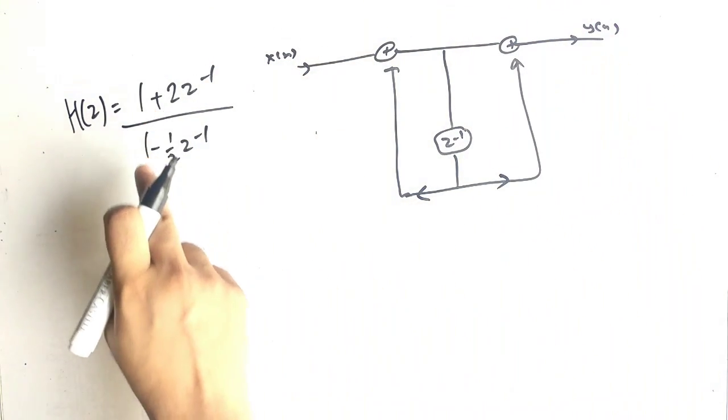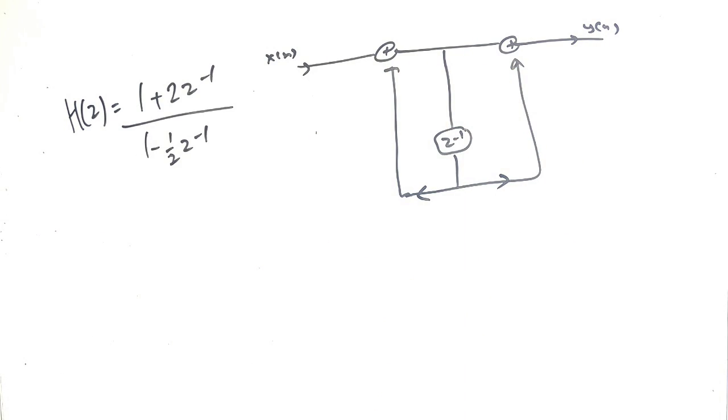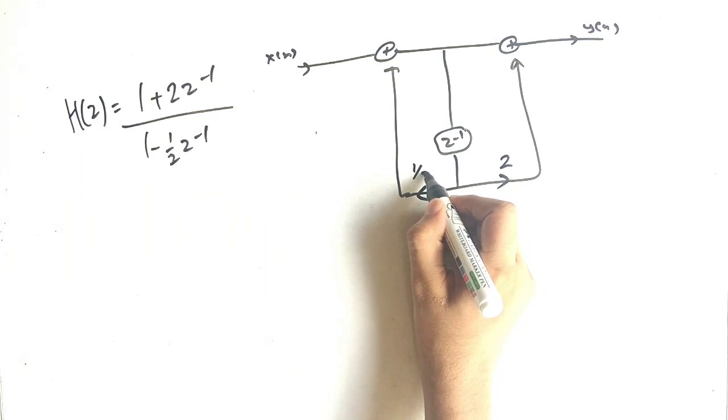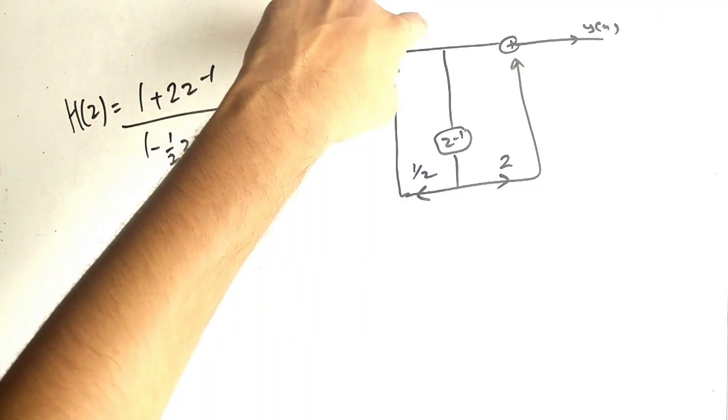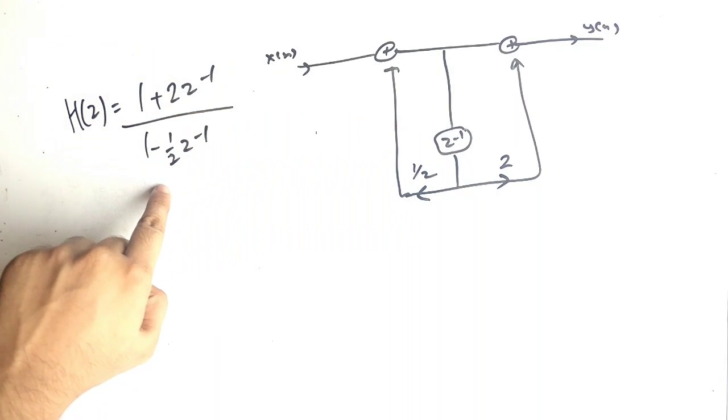You can see there are two terms present, so both plus signs will be present. For this we have 1, then we have 2 with respect to z inverse. Z inverse is here, multiplier is 2. For zero, coefficient will remain as it is, whereas in pole, coefficient will change its sign. You can see the 1 is as it is, z inverse term and the coefficient is minus 2, so it will change its sign.